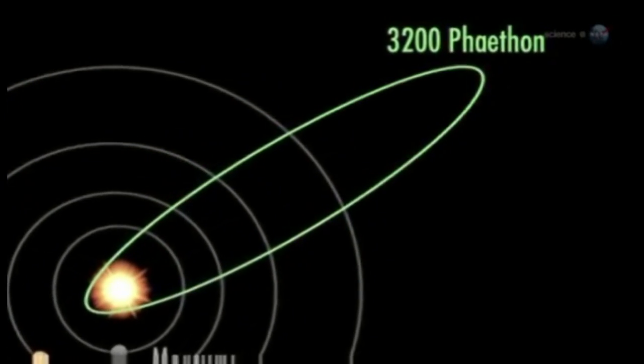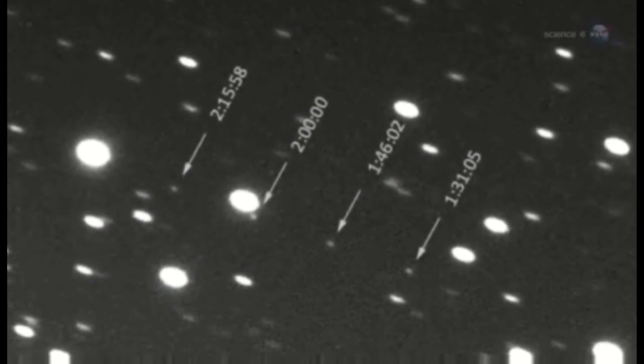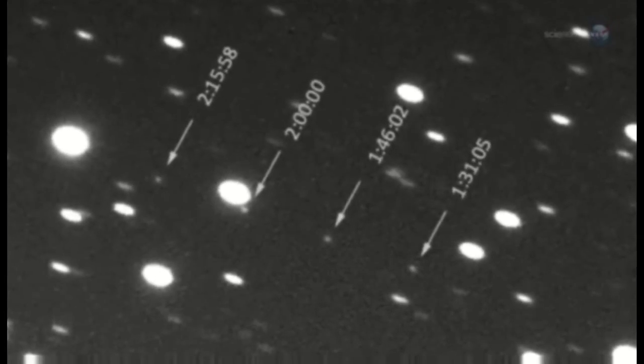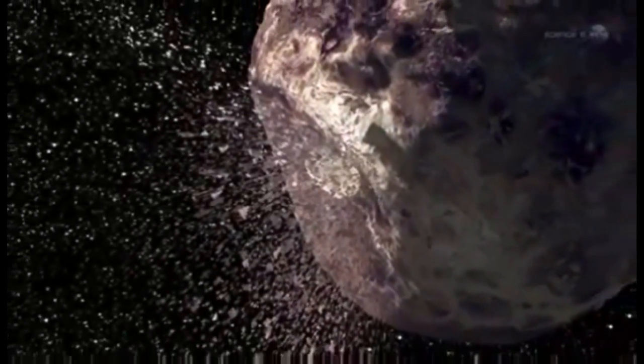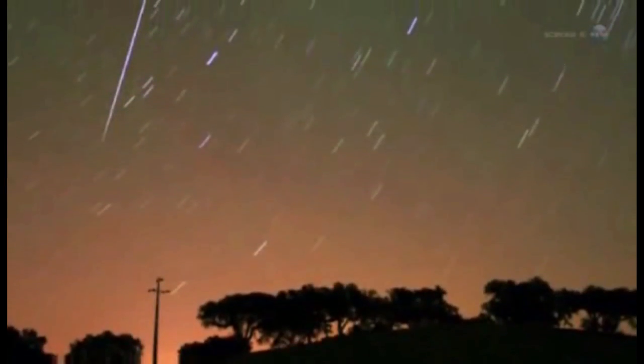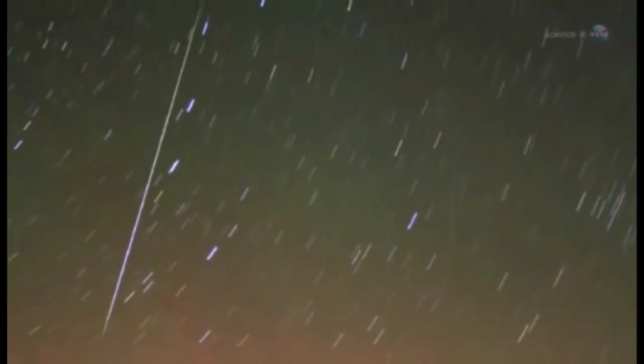Yet here was a puzzler. Everything about 3200 Phaethon suggests it's an asteroid, not a typical comet. In fact, 3200 Phaethon resembles main belt asteroid Pallas so much, it could well be a 5-kilometer chip off that 544-kilometer block. If 3200 Phaethon broke apart from asteroid Pallas, as some researchers believe, then Geminid meteoroids might be debris from the breakup, speculates Cook.